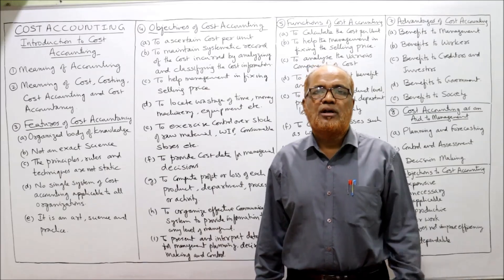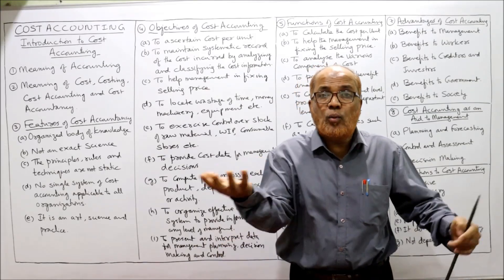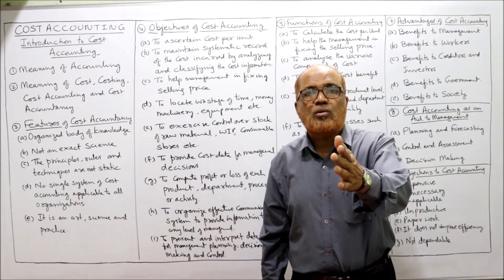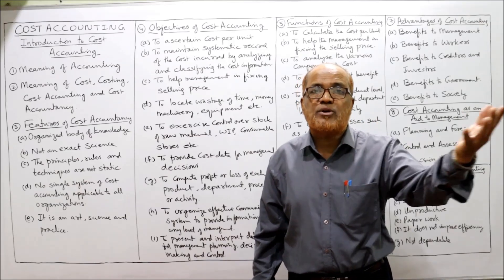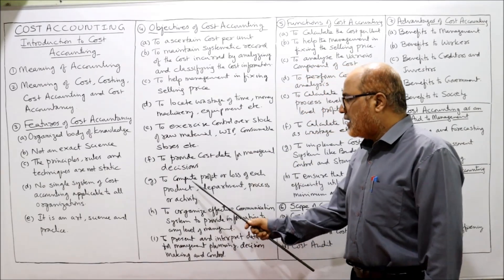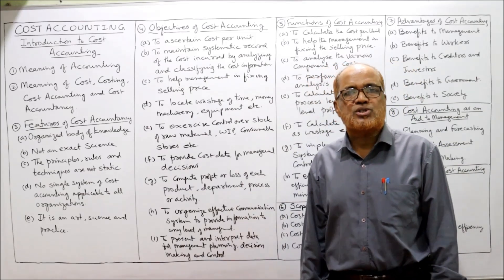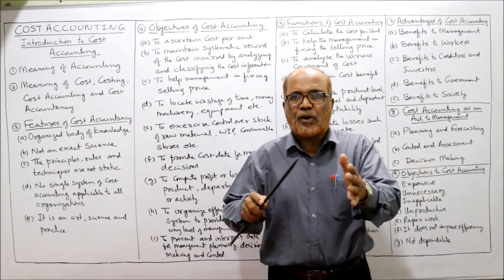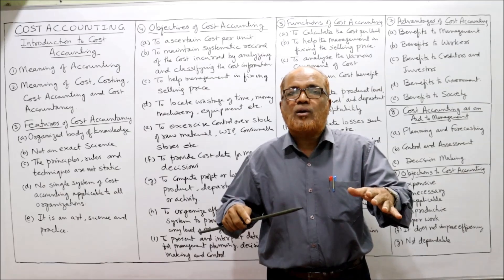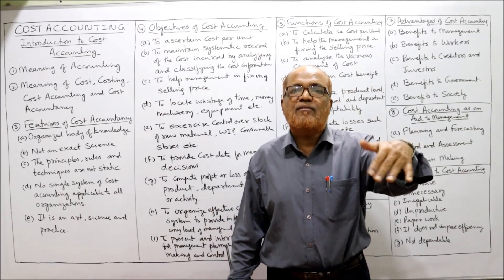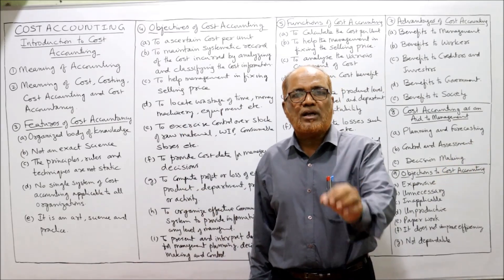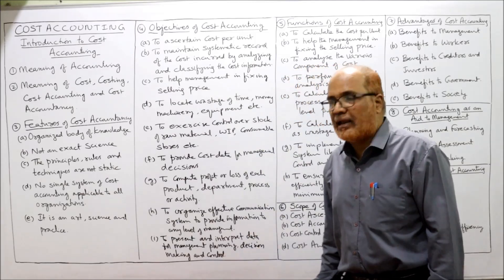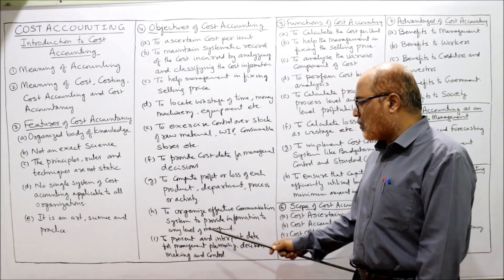Another objective is to provide cost data for managerial decisions. The foremost function of management is decision-making, and cost accounting continuously provides sufficient information to management for that purpose. Next, to compute profit and loss of each product, department, or process — management wants to find out the profitability of every product, department, and process, and cost accounting serves this objective.